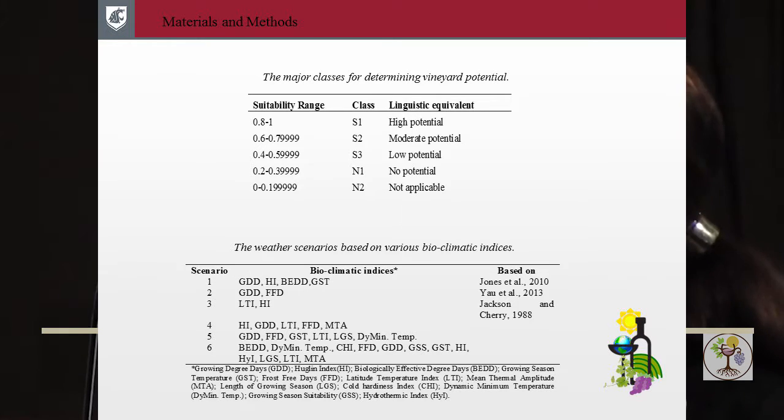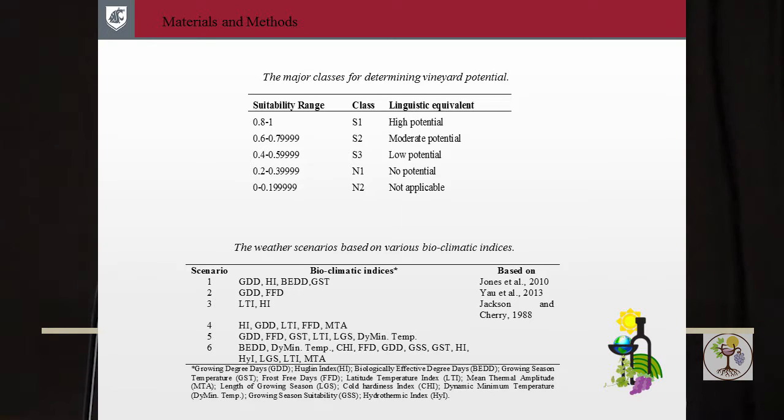As you can see here, we had five major classes ranging between zero to one, and each class had a value of 0.2. We also defined six different scenarios based on various bioclimatic indices. Our weather component was mainly composed of different bioclimatic indices, but we wanted to see what if we changed the bioclimatic indices used in the weather component. For these six different scenarios, what differs is just the weather component — the soil and topography remained the same.